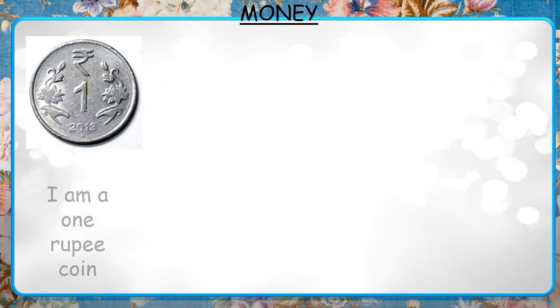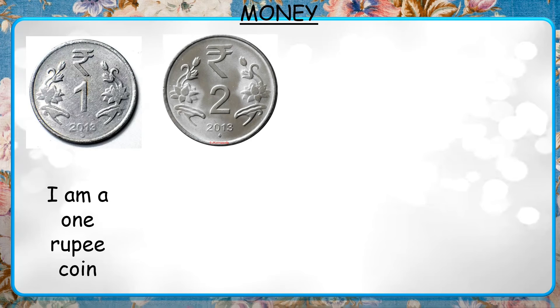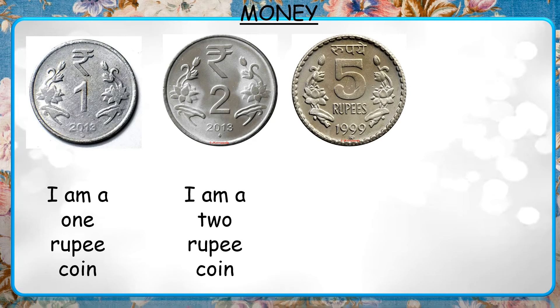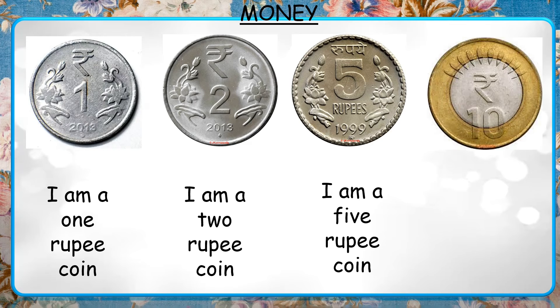Our next topic is Money. Children, have you seen your mother buying fruits, vegetables and other items in return of money? We are going to learn about different types of coins. This is a one rupee coin. Two rupee coin. Five rupee coin. Ten rupee coin. These are the different coins: one rupee, two rupees, five rupees and ten rupee coin.